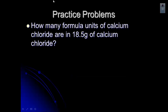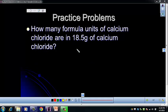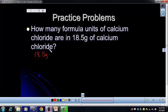This problem gives us the mass of calcium chloride and asks us to find how many formula units. We'll go from mass to moles using molar mass, then from moles to formula units using Avogadro's number. We start with 18.5 grams of calcium chloride. Calcium has a 2+ charge and chloride is 1−, so to make it neutral we need CaCl2.